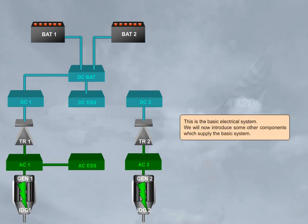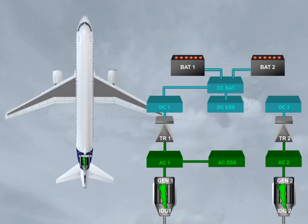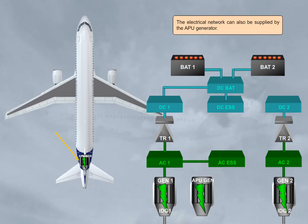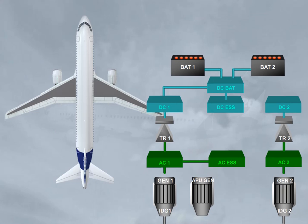This is the basic electrical system. We will now introduce some other components which supply the basic system. The electrical network can also be supplied by the APU generator. These three generators are all identical, and any one of them can supply the entire aircraft's electrical needs.